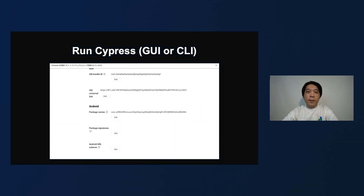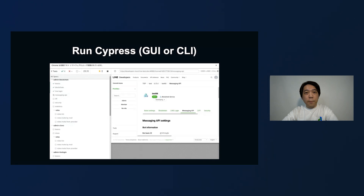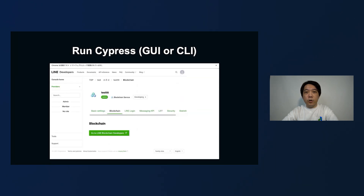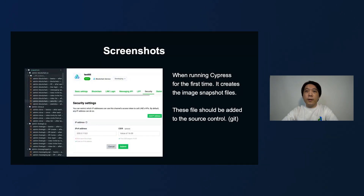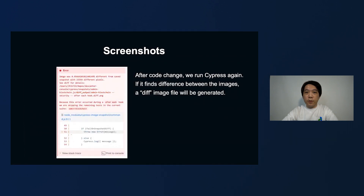Now we can run Cypress and let the magic happen. It will visit all the pages that we set up and take screenshots. When running Cypress for the first time, it creates the image snapshot files in configured folders. These files are considered as the standard and should be added to source control. After some code changes, we run Cypress again. If it finds a difference between the images, an error will be thrown — as you can see on the screen — and a diff image will be generated.